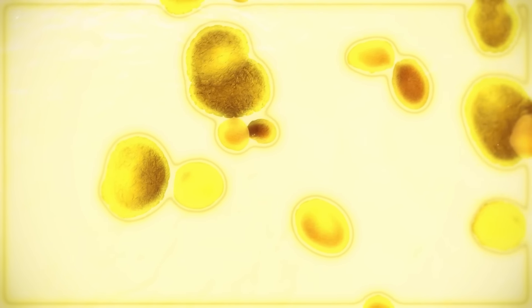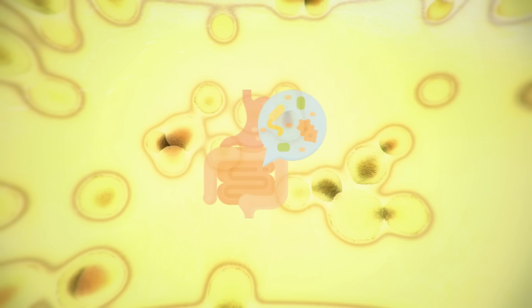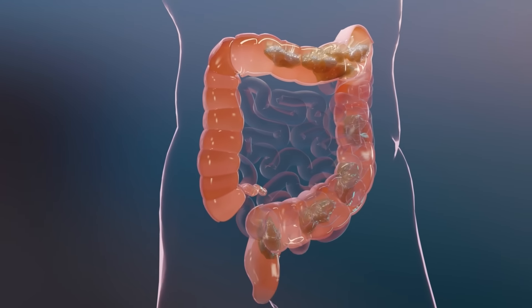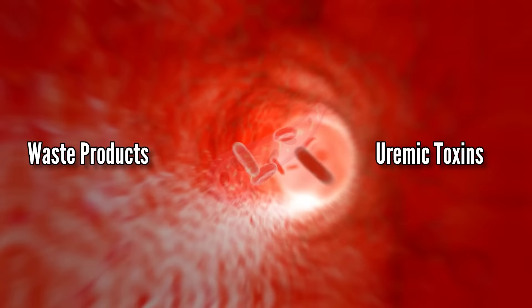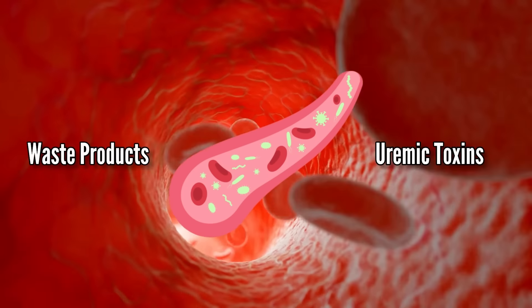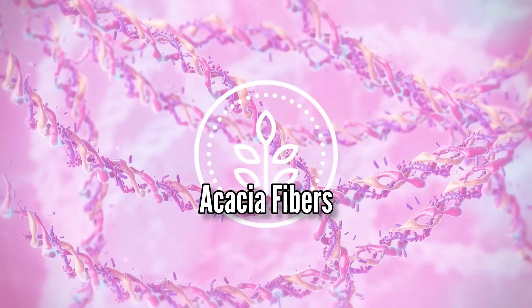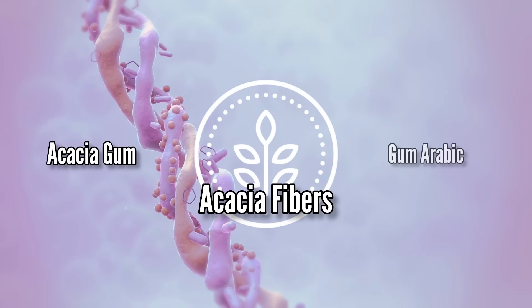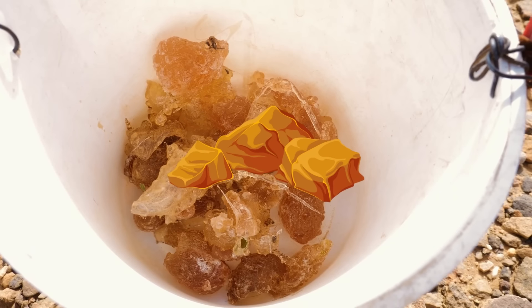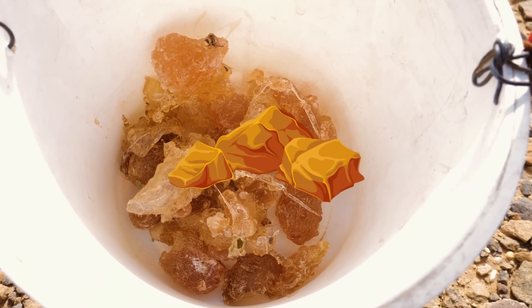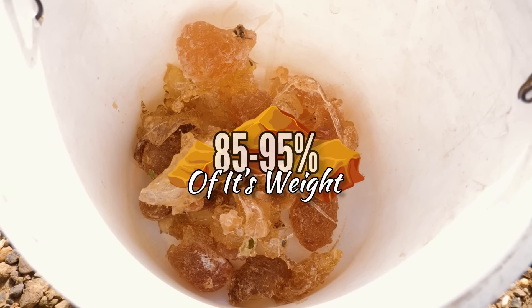The fiber in your food, particularly soluble fiber, binds with water and forms a gel-like substance in your gut. This gel can bind to waste products, including uremic toxins, and prevent them from getting into your bloodstream. One very rich source of soluble fiber is acacia fiber, also known as acacia gum or gum arabic. It is derived from the sap of the acacia senegal tree. Acacia gum typically contains a high percentage of soluble fiber, roughly 85 to 95 percent of its weight.